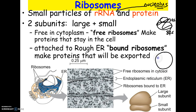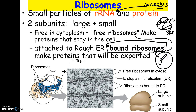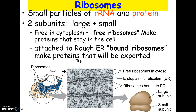You see ribosomes in two places in a cell. Free ribosomes are little dots floating freely — all ribosomes make protein, but free ribosomes make proteins for the cell itself. Bound ribosomes, on the other hand, are literally stuck to the endoplasmic reticulum, making it 'rough.' Those ribosomes make proteins that are going to get modified, packaged, and exported from the cell — for example, enzymes and hormones in multicellular organisms.